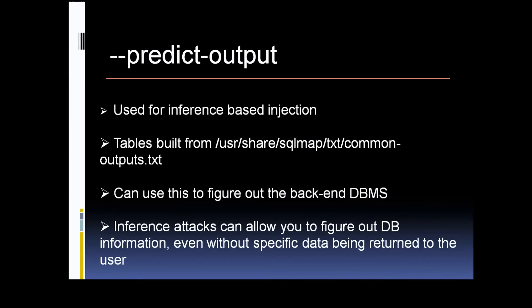SQL Map will build tables based on pre-configured outputs. If you go under user, share, the SQL Map text, and then common outputs, you can look through this and see how SQL Map is using this prediction. Based on the responses it gets back, it can try to fingerprint what type of database you're going against and then begin to extract data. As SQL Map discovers more and more information, the process actually speeds up, giving you a significant performance boost for blind SQL injection — because if you've ever tried to do it manually, it takes a lot of time and many requests need to be sent back and forth.